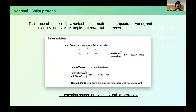Our protocol is designed to be flexible and customizable, allowing organizations, projects, and developers to create their own voting systems tailored to their specific needs. We support a wide range of election types — from one person one vote, ranked choice, weighted voting, multi-choice, quadratic voting, and more — all by just changing the ballot variables, making it very simple to use. You can check more details at the link with a full explanation of how it works.